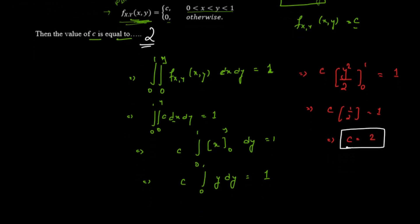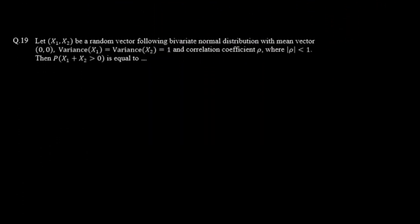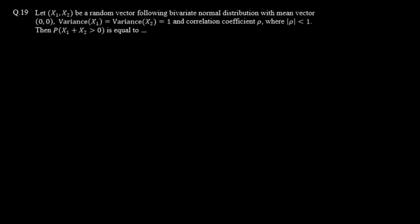Now we move on to question number 19. Here, x₁ and x₂ are a random vector following a bivariate normal distribution with mean vector (0, 0), variances σ²(x₁) = σ²(x₂) = 1, and correlation coefficient ρ where |ρ| < 1, meaning ρ lies in the range (−1, 1).